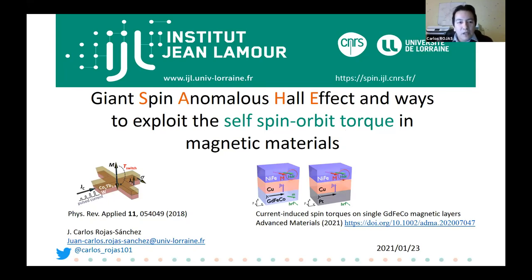In the first part of my talk, I will discuss spin-orbit switching in the system tungsten/cobalt-terbium, where we report a new characteristic temperature. In the second part, we use this ferrimagnetic amorphous cobalt as an efficient source of spin currents and self-production of spin-orbit torque.